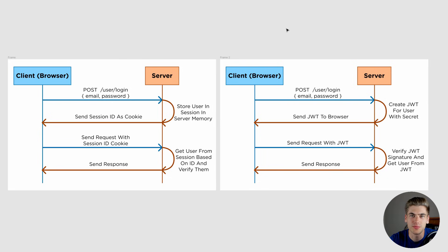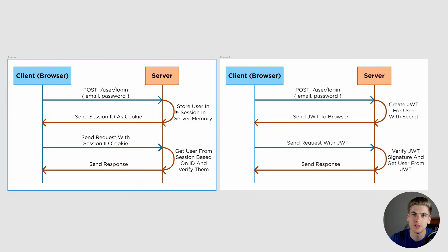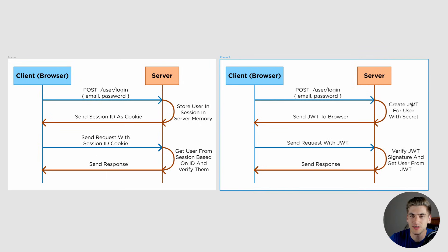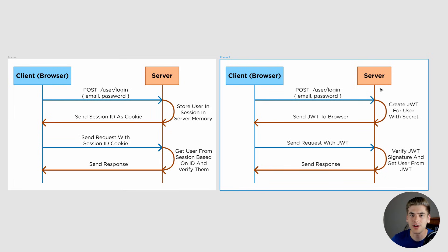The main difference between these two approaches is that in the session version, the information about the user is stored on the server, so the server has to do a lookup to find the user based on the session ID. But with JWT, the user information is stored in the actual token, which means it's stored on the client, and the server doesn't have to remember anything. This is great because you can use the same JSON web token across multiple servers without running into problems where one server has a certain session and the other doesn't.